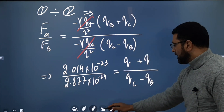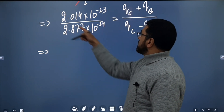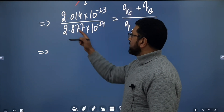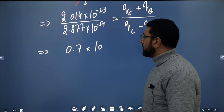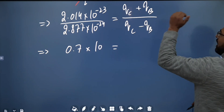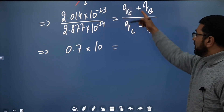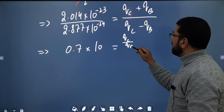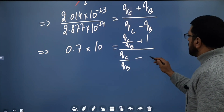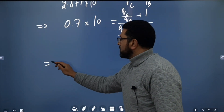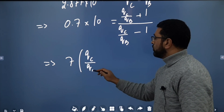So we have 7 = (qC + qB) / (qC − qB). Dividing numerator and denominator by qB, we get 7 = (qC/qB + 1) / (qC/qB − 1). This implies 7·(qC/qB − 1) = qC/qB + 1.